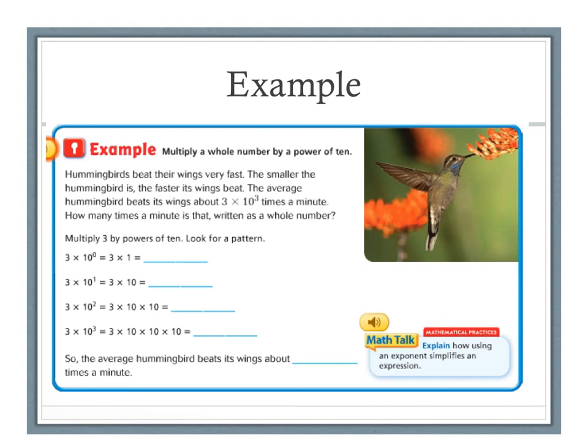Let's look at an example of multiplying a whole number by a power of 10. Hummingbirds beat their wings very fast. The smaller the hummingbird is, the faster its wings beat.